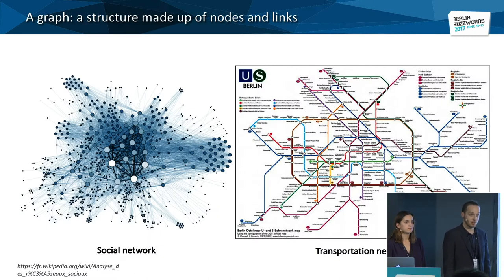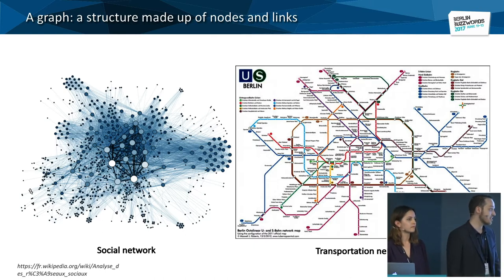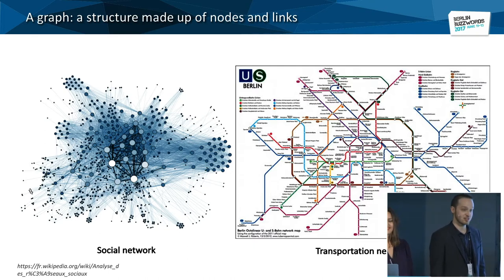First of all, we are going to talk about graph theory. So what is a graph? The question could really be reversed: what is not a graph? A graph is just a set of elements, also called nodes, that are interconnected by links or edges. Really, almost any system can be seen as a graph, because for any system we can look at the basic components and how they are interconnected. Here we have two examples: a social network where each node is a person and links are the interconnections between people, and a transportation network.